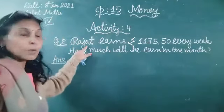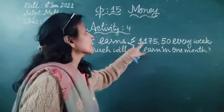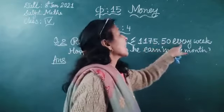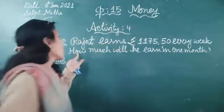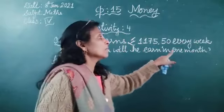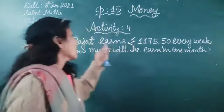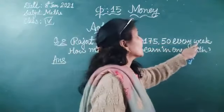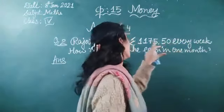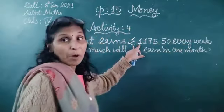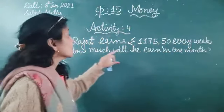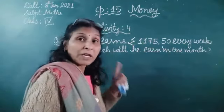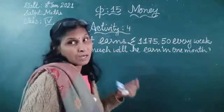Now question number 2. Raja earns rupees one thousand one hundred seventy five point fifty paisa every week. How much will he earn in one month? Here you first see that the earnings per week are given. You need to calculate the total earnings in one month.